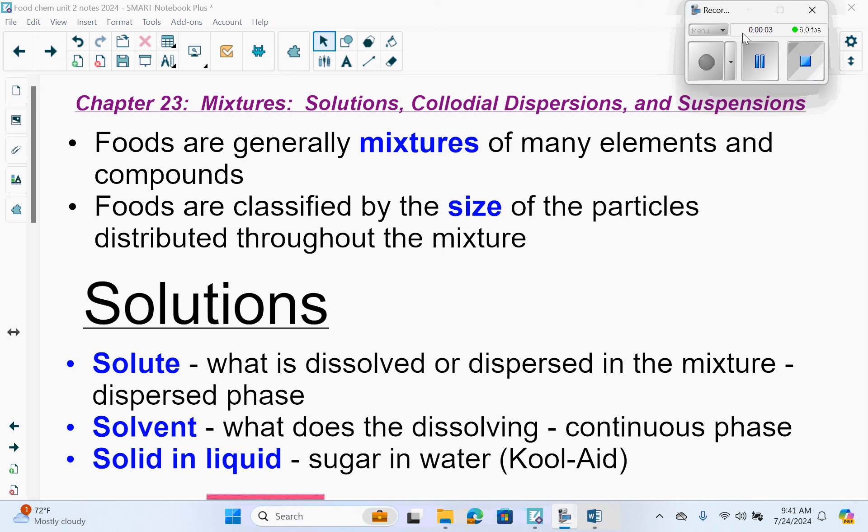This is Food Chemistry Unit 2, Chapter 23: Mixtures, Solutions, Colloidal Dispersions, and Suspensions. I went to Chapter 23 because it talks about solutions, which I just mentioned in our previous video. I'm connecting this because I'm still talking about solutions.